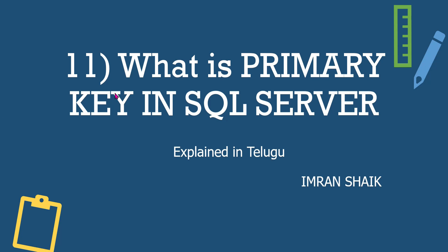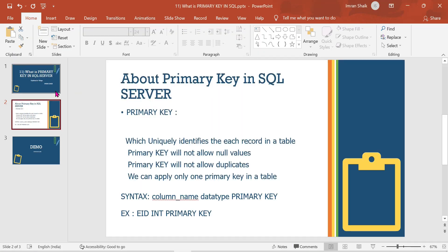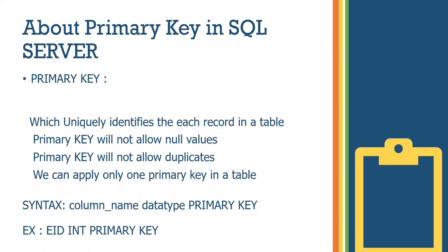In real time we have a mobile number — this is a primary key. Your mobile number and another person's mobile number cannot be the same. Similarly, an email ID is a primary key. If we have a roll number in the class, that is also a primary key. So we can choose a primary key to uniquely identify each record in the table.